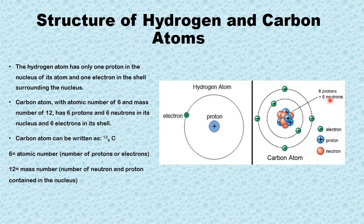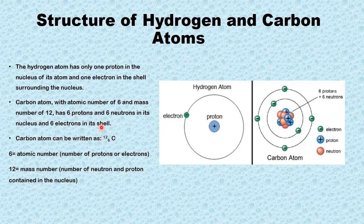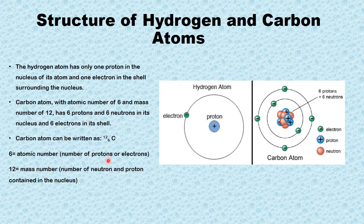Within the nucleus you have 6 protons and 6 neutrons, which combining together forms the mass number, while the atomic number refers only to the number of protons. Carbon atom can be written in a standard format: the capital letter represents the element, 12 represents the mass number, and 6 below represents the atomic number. The atomic number of 6 is the number of protons — or electrons in a neutral atom — while the mass number is the number of neutrons and protons contained in the nucleus.